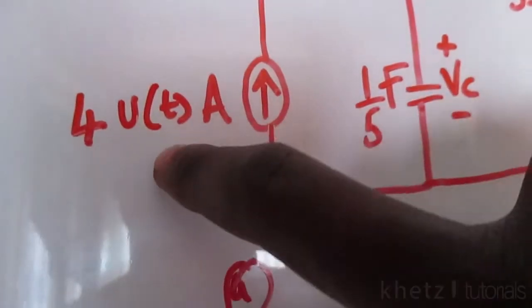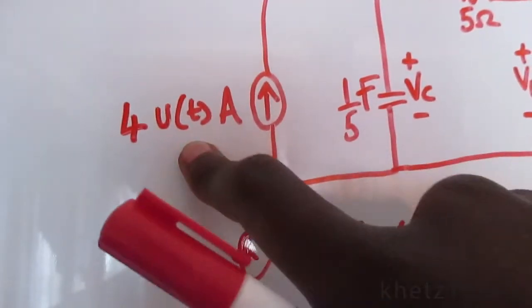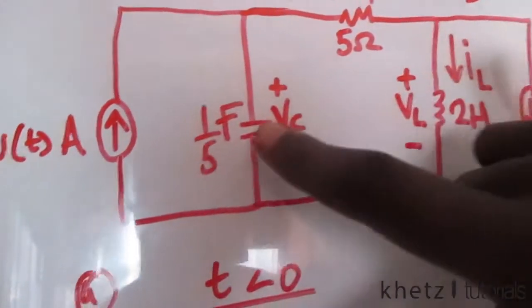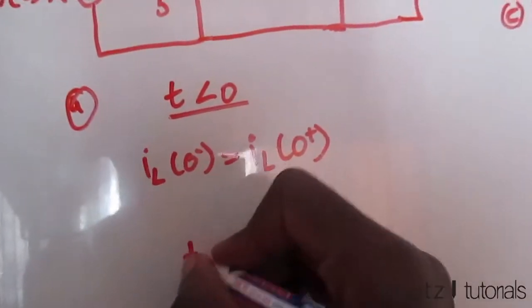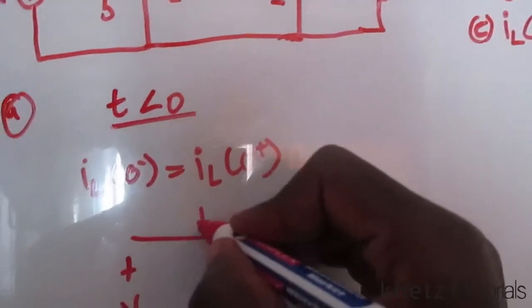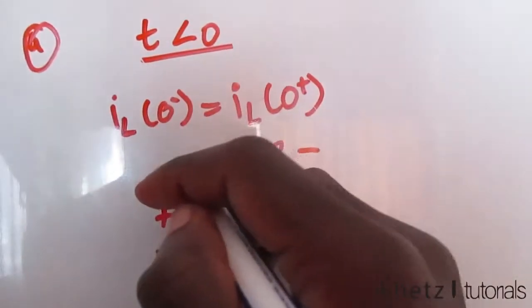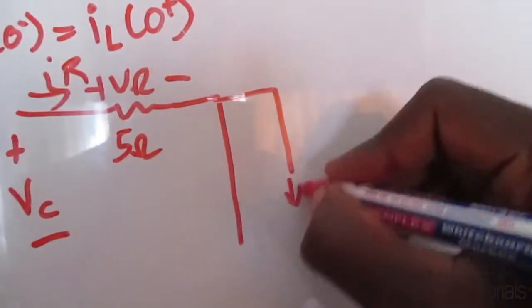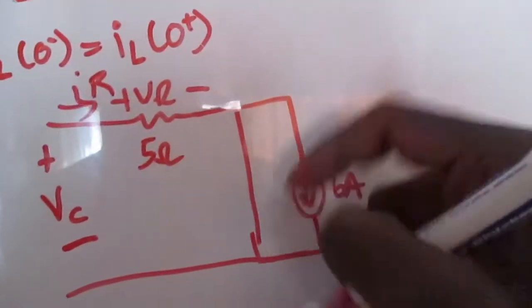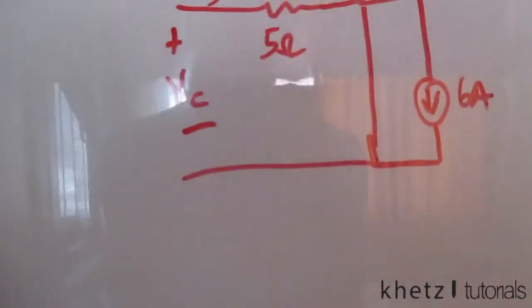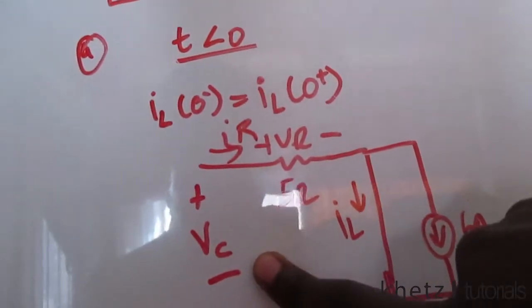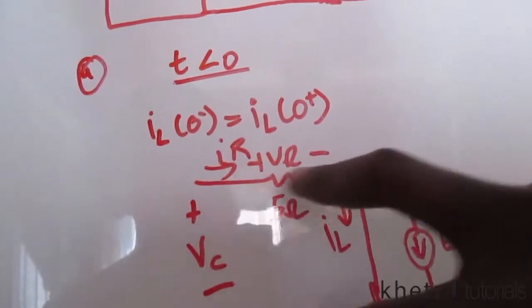Considering this circuit in steady state: the current source is inactive at time less than zero, as it is multiplied by a step function active only for time greater than zero. The capacitor becomes an open circuit and the inductor becomes a short circuit. So we have VC there, VR over here, and a short circuit for the inductor.